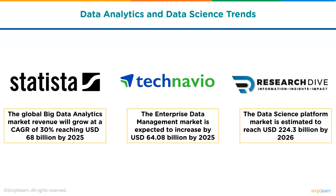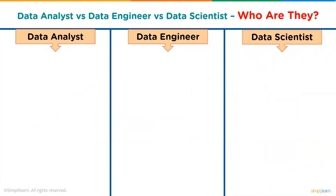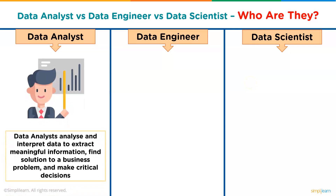Now let's learn the major differences between data analyst, data engineer, and data scientist. A data analyst analyzes and interprets vast volumes of data in order to extract meaningful information. They find solutions to business problems and make critical business decisions. The insights provided by data analysts are important to companies that want to understand the needs of their end customers.